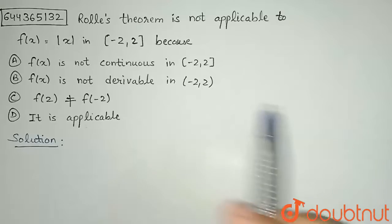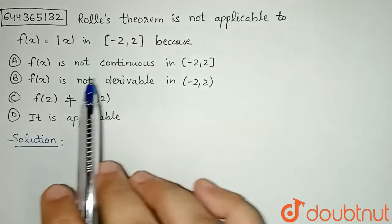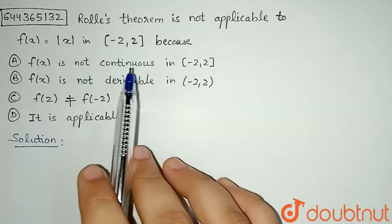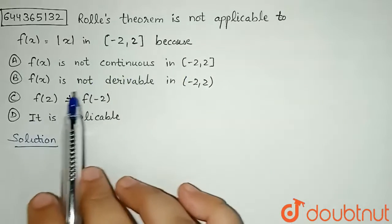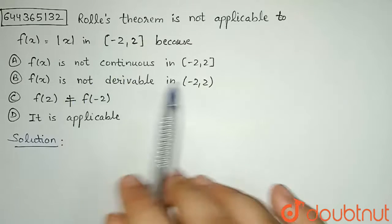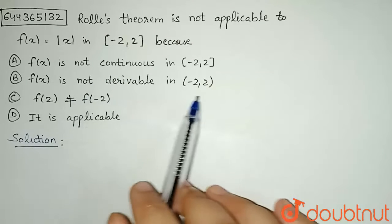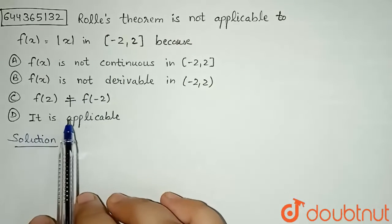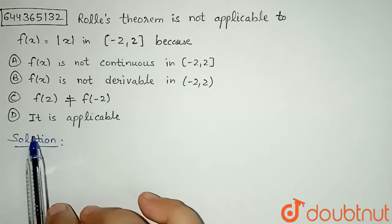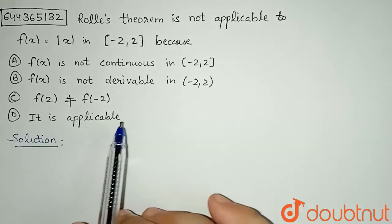Hello everyone, the question is: Rolle's theorem is not applicable to f(x) equal to mod x in minus 2 to 2 because f(x) is not continuous in minus 2 to 2, f(x) is not derivable in minus 2 to 2, f of 2 not equal to f of minus 2, or option D it is applicable.